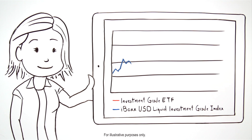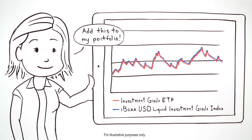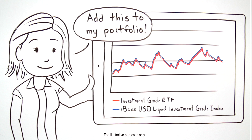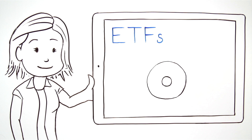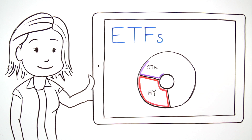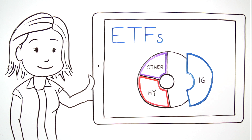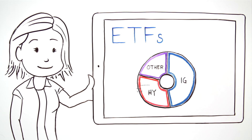Because iBOX indices were designed to be easily replicated, they've quickly become a primary tool of passive and even active investment managers. ETFs linked to iBOX indices provide a transparent, cost-effective way to gain exposure to different segments of the global bond market.